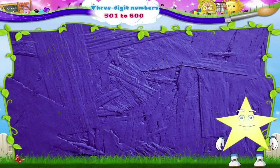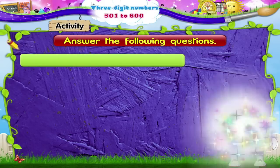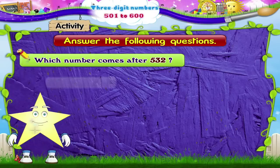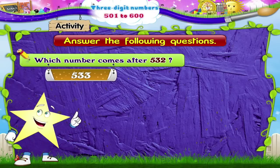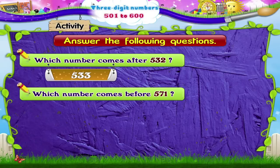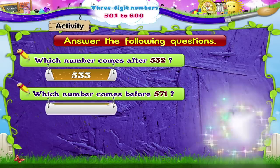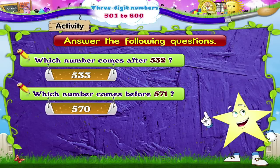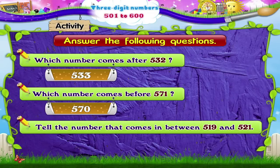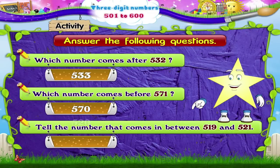Starry, here are some easy questions for you. Answer them very quickly. Which number comes after 532? 533. Which number comes before 571? 570. Can you tell the number that comes in between 519 and 521? It is 520!